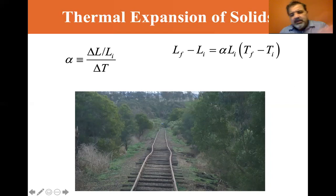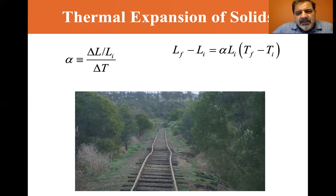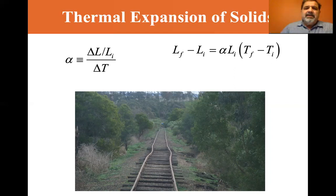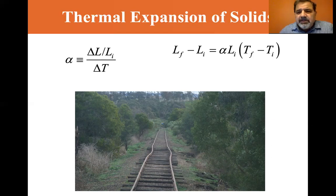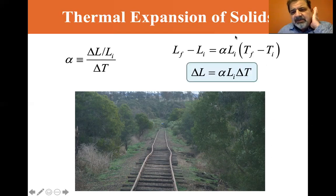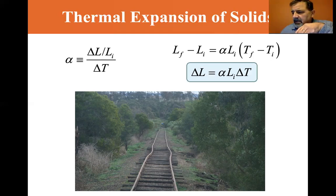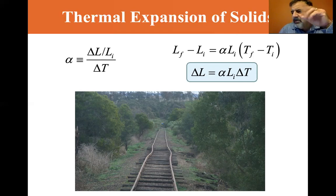So L-final minus L-initial: rearranging, delta-T — that is T-final minus T-initial — times alpha times L-initial gives you delta-L, which is L-final minus L-initial. So delta-L equals alpha times L-initial times delta-T. That is our equation for thermal expansion: the change in length equals the coefficient of linear expansion times the initial length times the change in temperature.